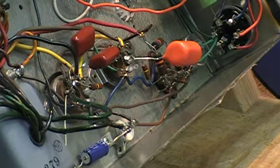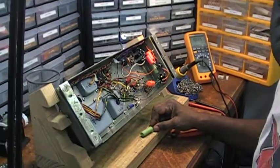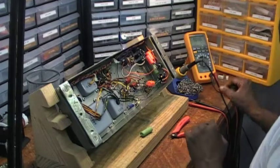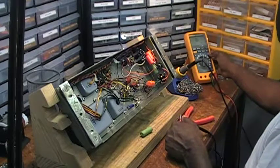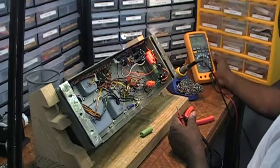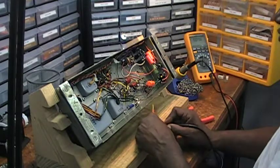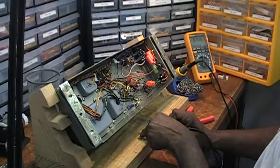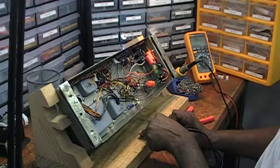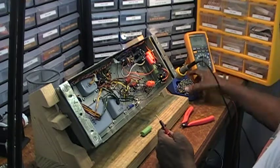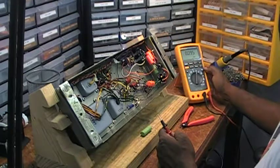And so this is a 0.1 microfarad capacitor. All right. Let's see what we get here. So this capacitor actually is checking within the range. It's checking within range.